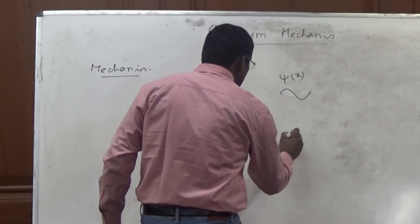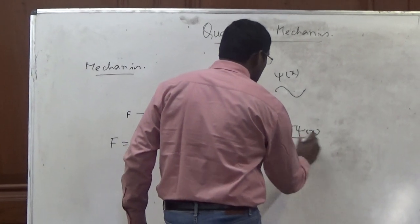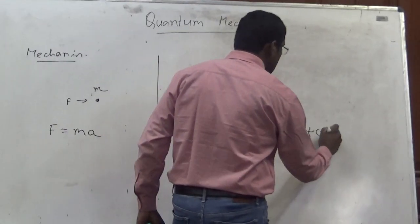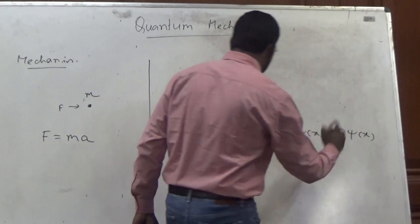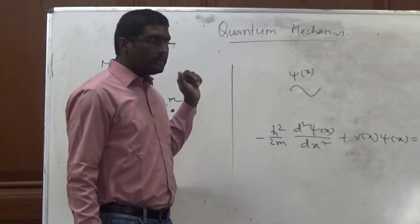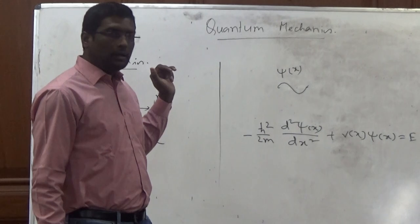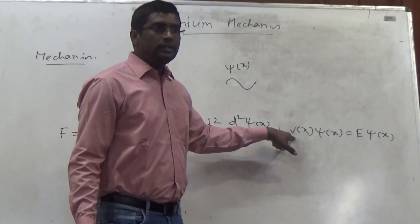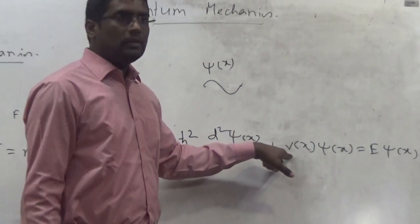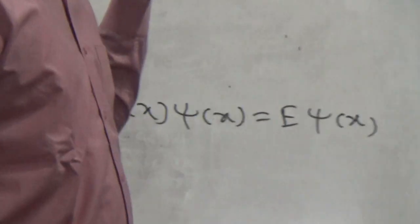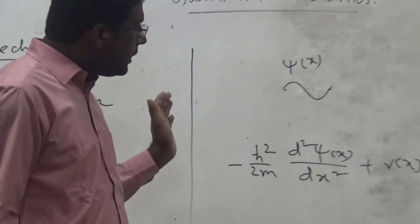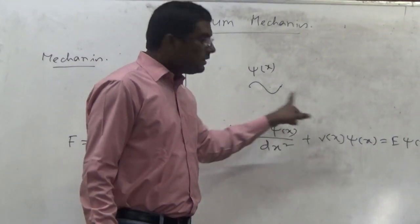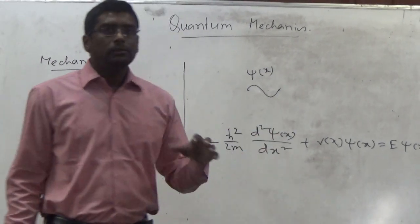He derived an equation analogous to Newton's equation but for the wave. That is called the Schrödinger wave equation: minus h-bar squared over 2m, times d²ψ(x)/dx², plus V·ψ(x), equals E·ψ(x). Here, h-bar is the reduced Planck constant, m is the mass of the particle, ψ is the wave function associated with the particle, V is the potential in which the particle exists, and E is the energy of the particle.